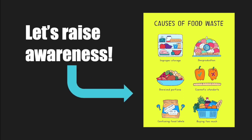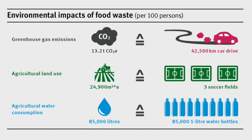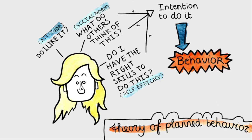A study by Richter describes that there is a positive awareness of how much food people waste, as well as a shortage of knowledge about the environmental consequences of this behavior. A theory that fits well into this idea about why people waste food is the Theory of Planned Behavior.